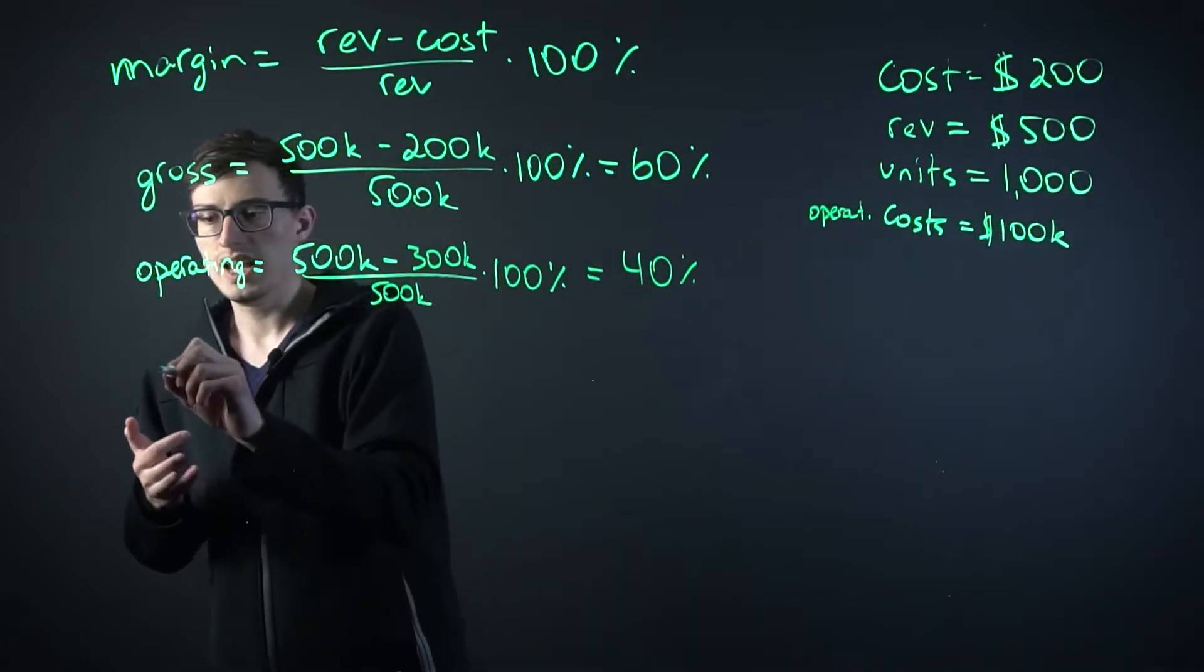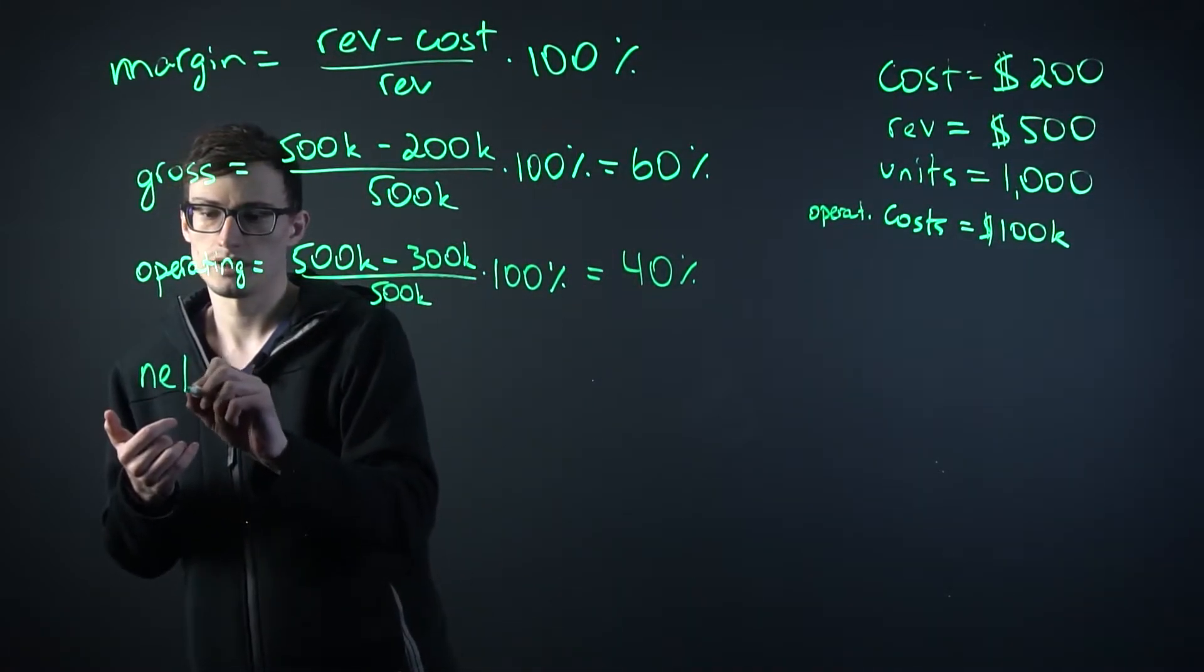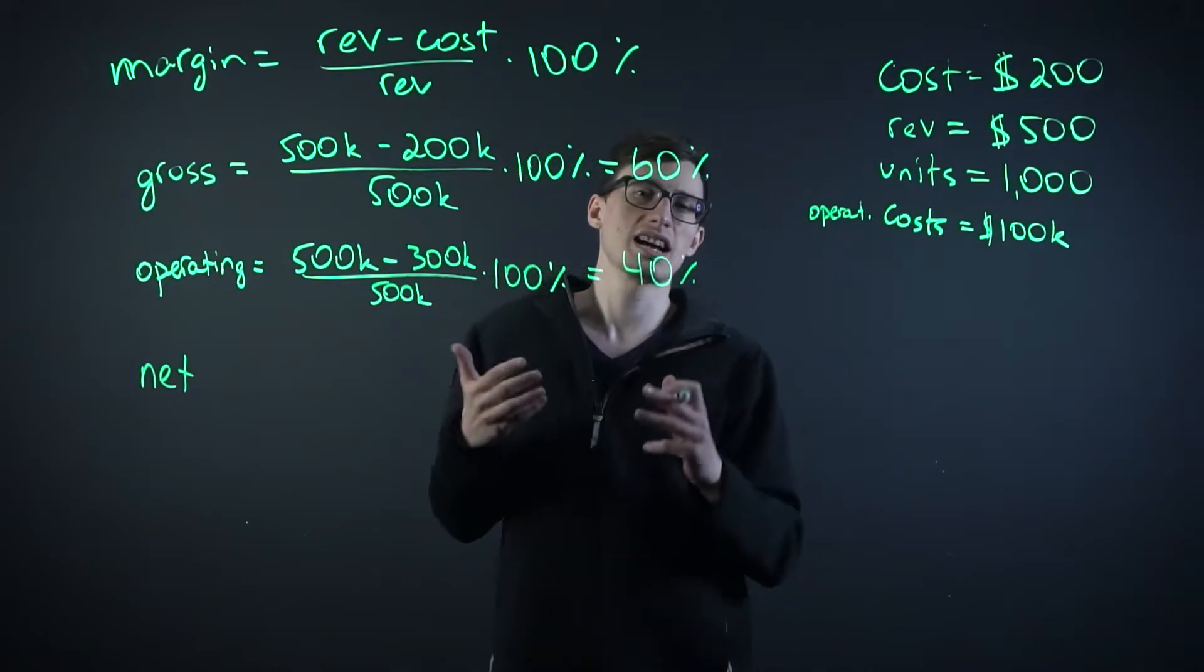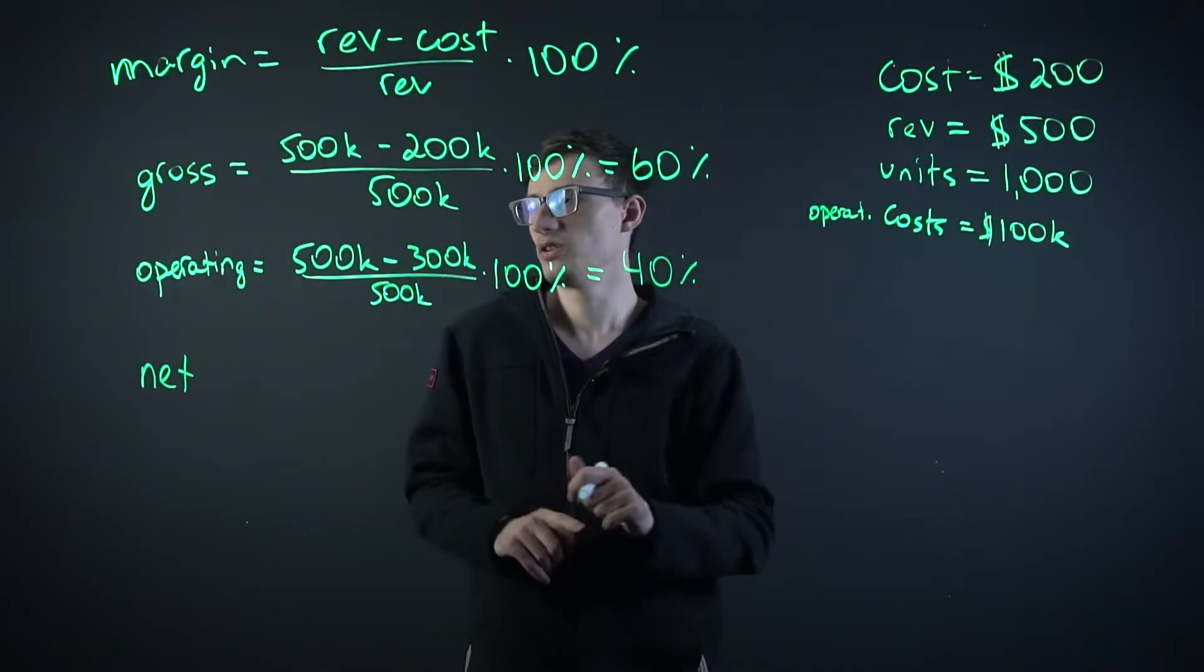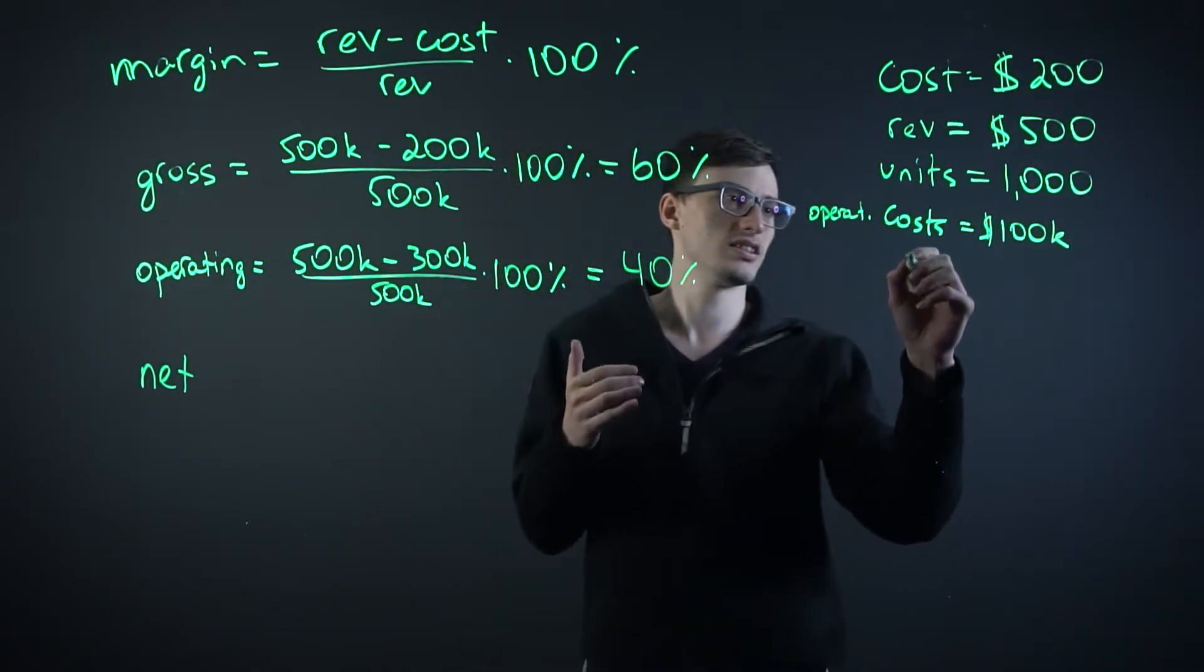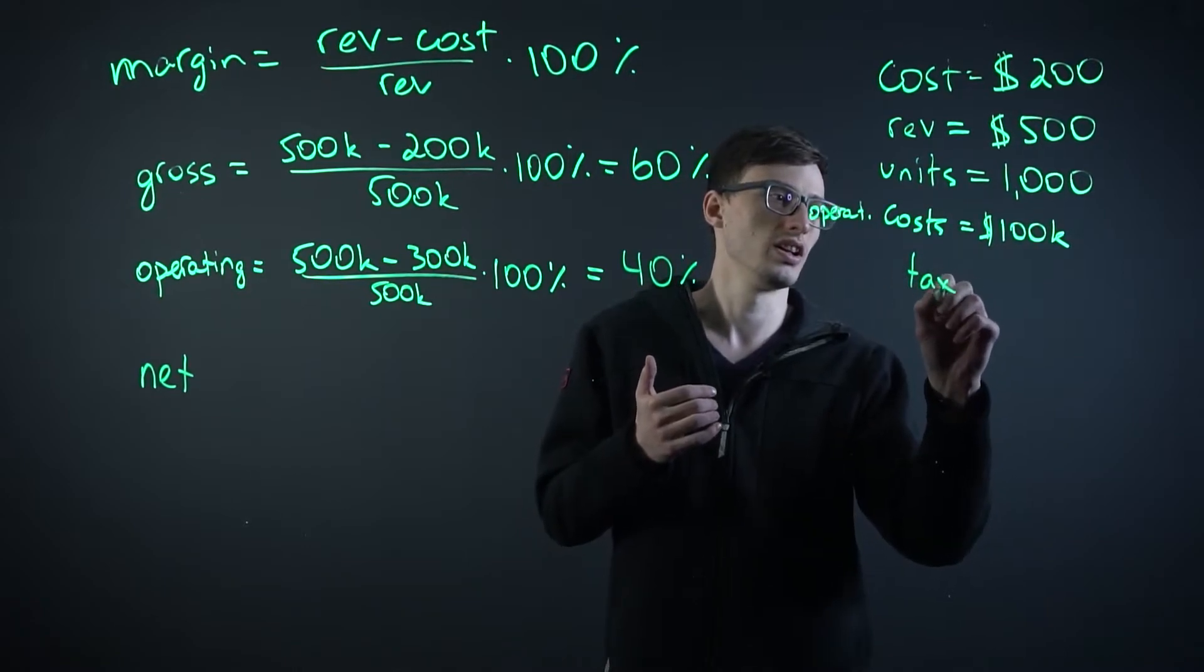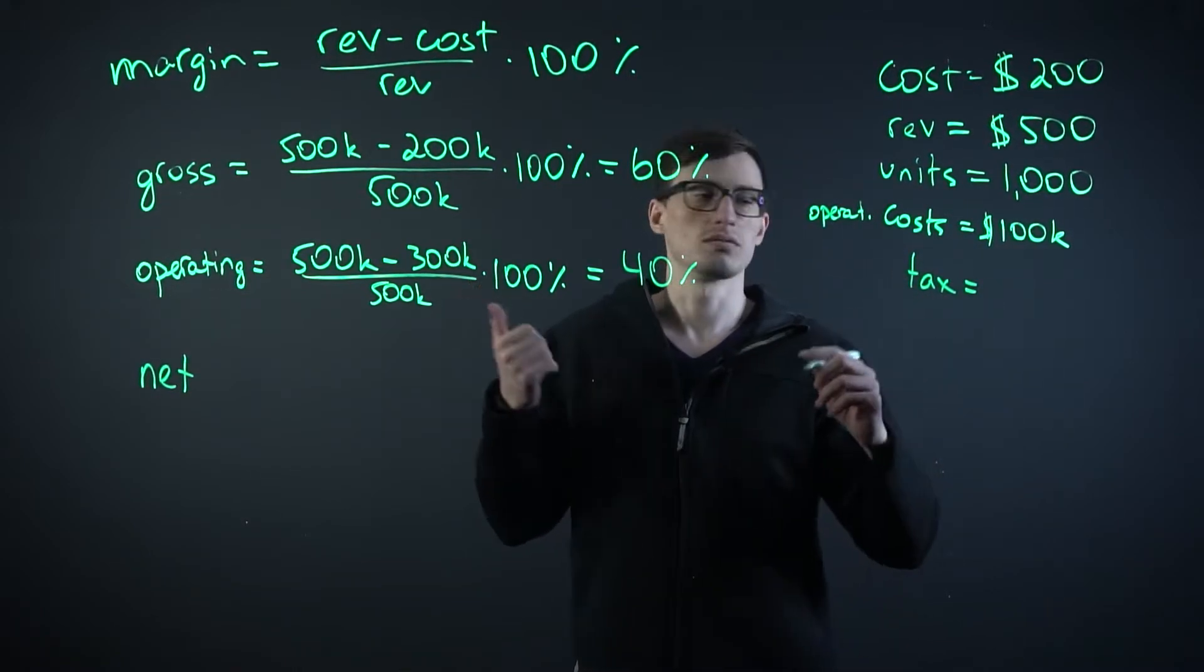And the final one, net profit margin, that is when we take taxes and the credit that you have to pay off everything into account. So let's say that the tax in this country is 10%.